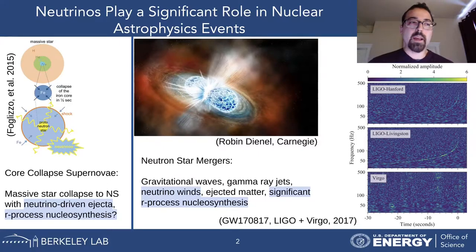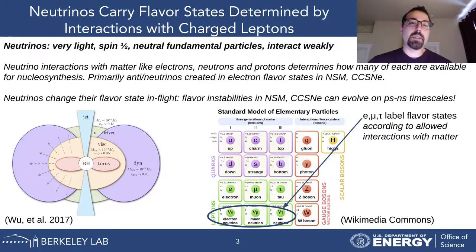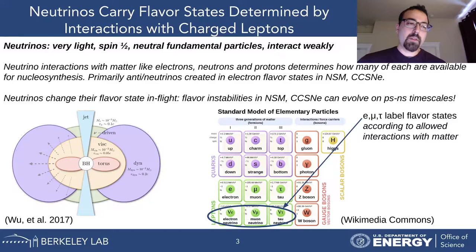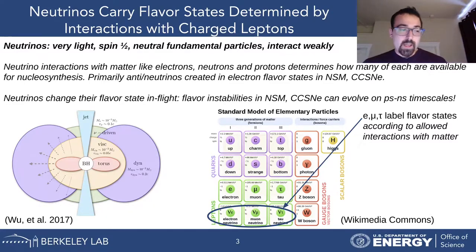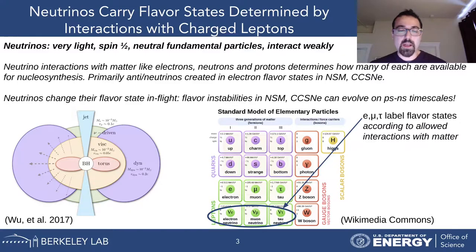Neutrinos play an important role in setting properties of nucleosynthesis for mergers. Neutrinos are very light, spin-one-half, electrically neutral fundamental particles that interact via the weak nuclear force. They are created in neutron star mergers from a very hot equatorial disk surrounding the central merged object, either a black hole or a short-lived hypermassive neutron star. This hot disk cools via emitting neutrinos with characteristic energies of 10 MeV. At these energies, neutrinos and anti-neutrinos can create electrons or positrons, but not muon or tau leptons, since those are energetically disfavored — their energies are much higher than 10 MeV.